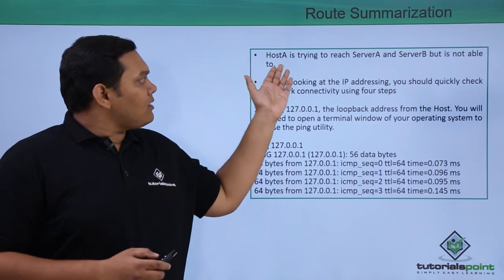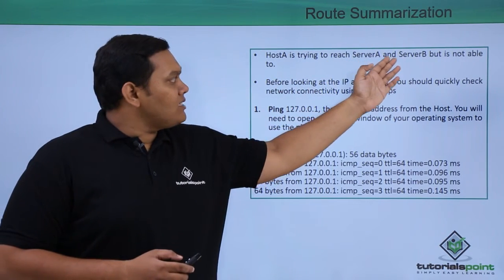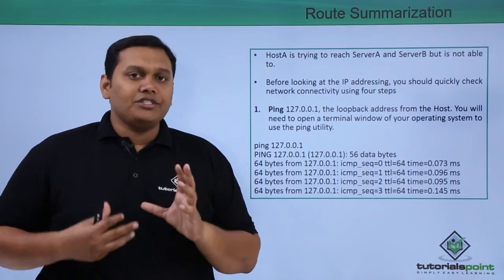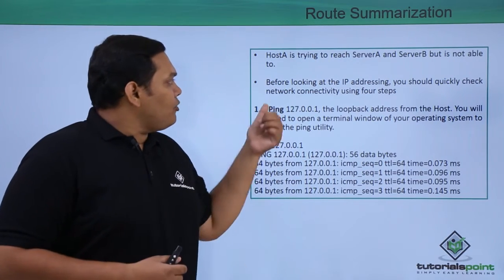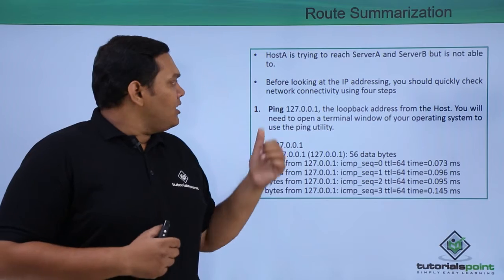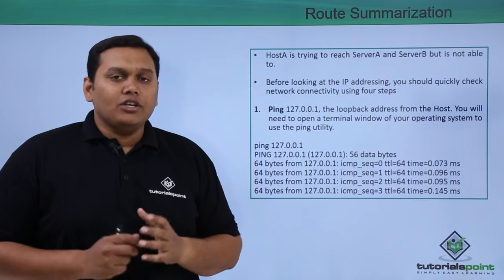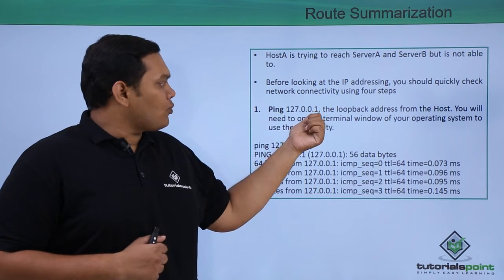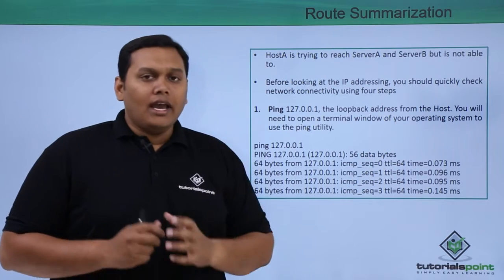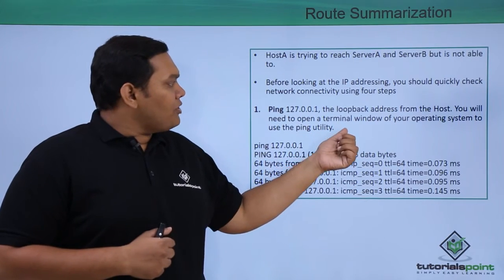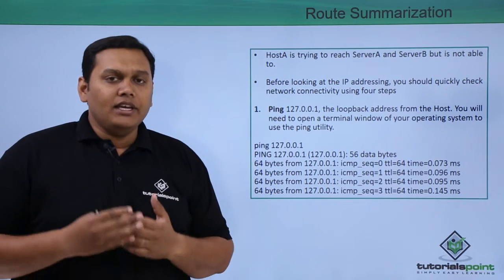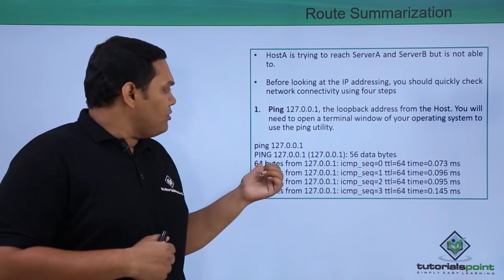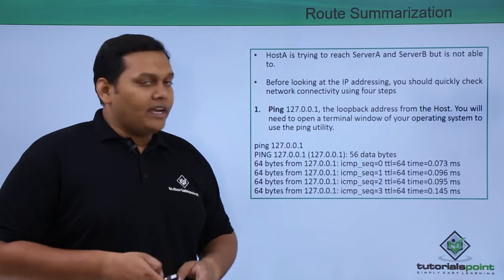Host A is trying to reach Server A and Server B but is not able to do so. Before looking at IP addressing, you should quickly check network connectivity using four steps. The first step is pinging 127.0.0.1, which is the loopback address, from the host. Using the ping utility on your operating system's terminal, pinging 127.0.0.1 will confirm that you are able to communicate locally.